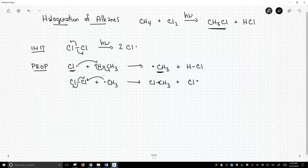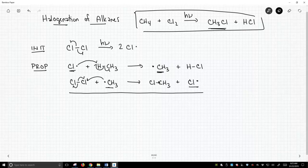Again, this is a propagation step. One radical goes in, one radical comes back out. So if we've done everything properly, we ought to be able to take our propagation steps, add them up, and what should fall out will be the net reaction that we put at the top of the slide.